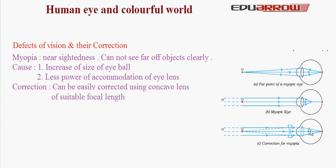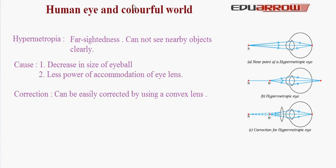Let us now discuss another defect of vision: hypermetropia. Hypermetropia is the defect of vision in which a person can see far-off objects clearly — that is, far-sightedness — but cannot see nearby objects clearly. The near point of a hypermetropic eye is farther than the normal near point of 25 cm, as shown in the figure. Hypermetropia has two causes: 1. Decrease in size of the eyeball — when the eyeball is smaller, the image of near objects is formed beyond the retina, so a clear image cannot be obtained. 2. Less power of accommodation of the eye lens — if the eye lens cannot accommodate the rays properly, a clear image cannot be formed.